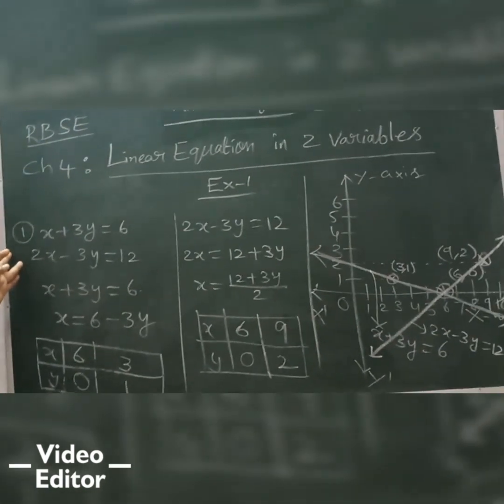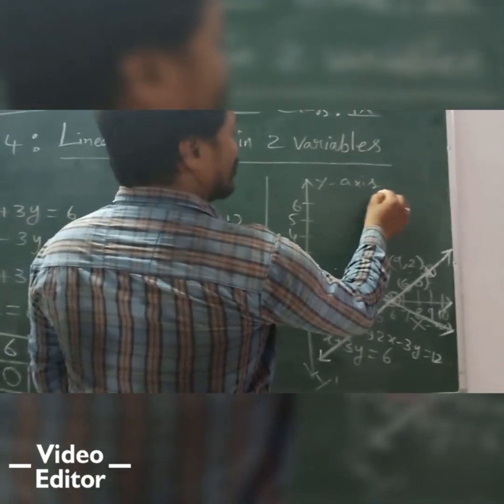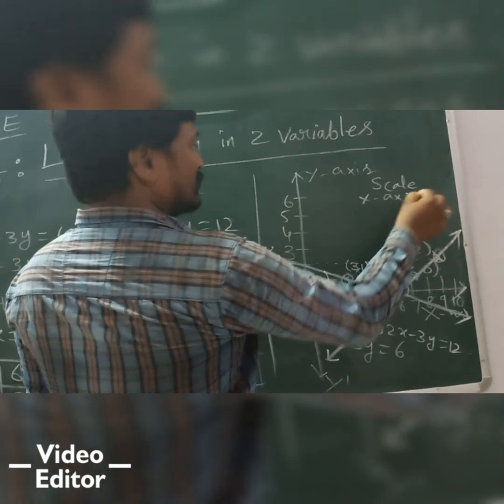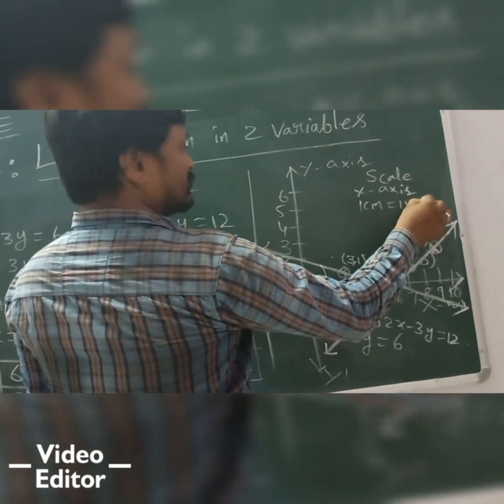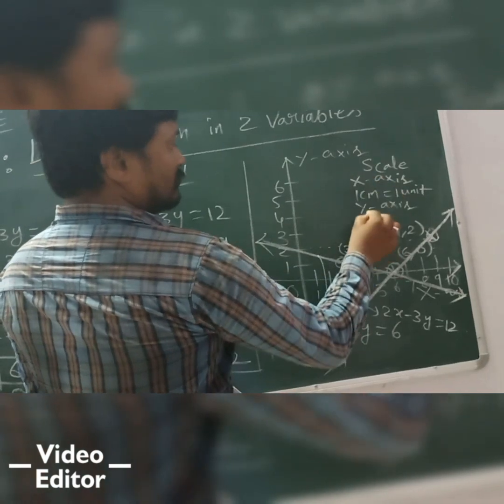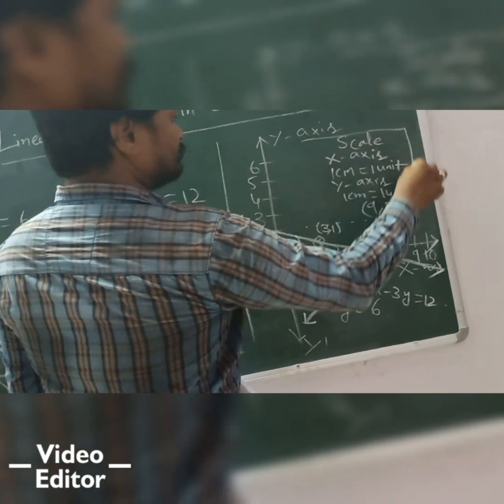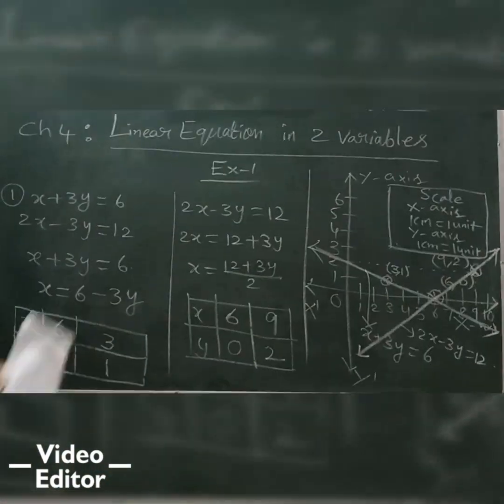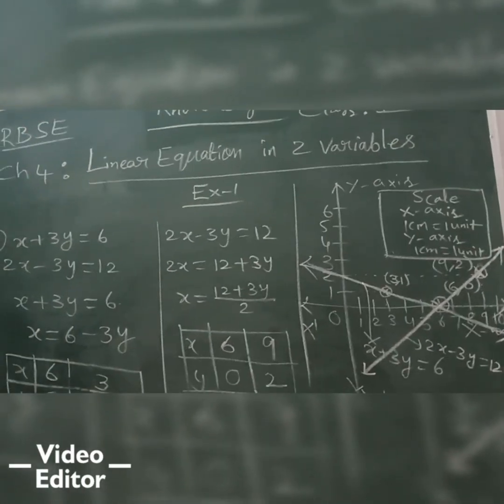And here we have to write scale on this. So, x axis: 1 cm is equal to 1 unit. Same manner, y axis: 1 cm is equal to 1 unit. Okay? This is how it should look now. So, if you have any doubts, you can ask me. If you have any doubts, you can ask me.